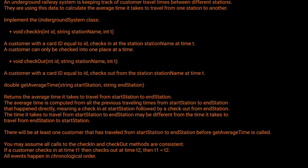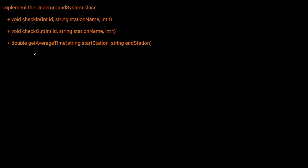Now let's think about how we want to approach this problem. We want to implement the Underground System class with a check-in function, a check-out function, and a get_average_time function. The get_average_time function is given a start station and an end station and wants to return the average time — and we want to do this as quickly as possible.